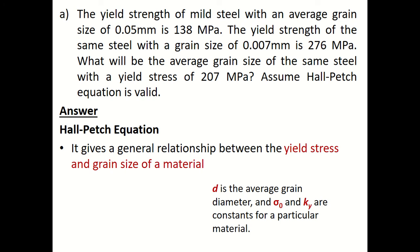We know the Hall-Petch equation: the yield stress is equal to sigma o plus ky divided by root d, where d is the average grain diameter.